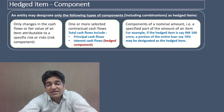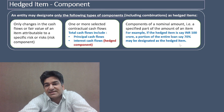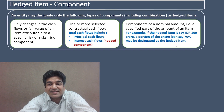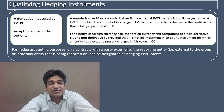Component number three: Ind AS 109 says that a component of a nominal amount can be a hedged item. For example, if the hedged item is a loan of 100 crore, a portion of that loan — say 70 crore — may be designated as the hedged item. So out of the total loan of 100 crores, 70 crores can be designated as the hedged item.